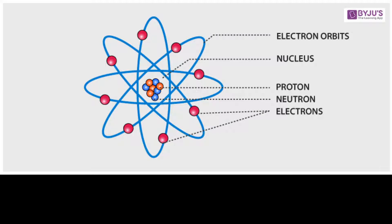Proton has positive charge. Neutrons are electrically neutral and electrons have negative charge. Protons and neutrons are present inside the center of the atom, which we call the nucleus. Electrons revolve around the nucleus. So these are the three particles.